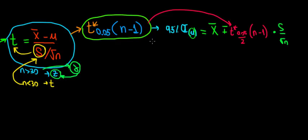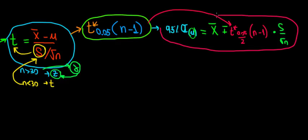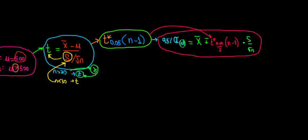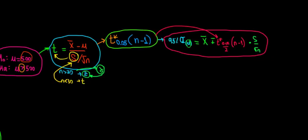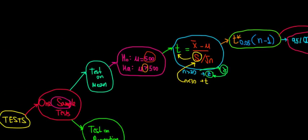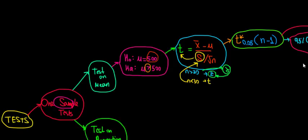That is an example of what we're going to do in these videos. This is the highlight of a one-sample test on mean - we saw why we use it and what type of test we have. In the next video, we're going to do the same for the test on proportion, and then we're going to go to two-sample tests to see the similarities and differences between one-sample and two-sample tests.